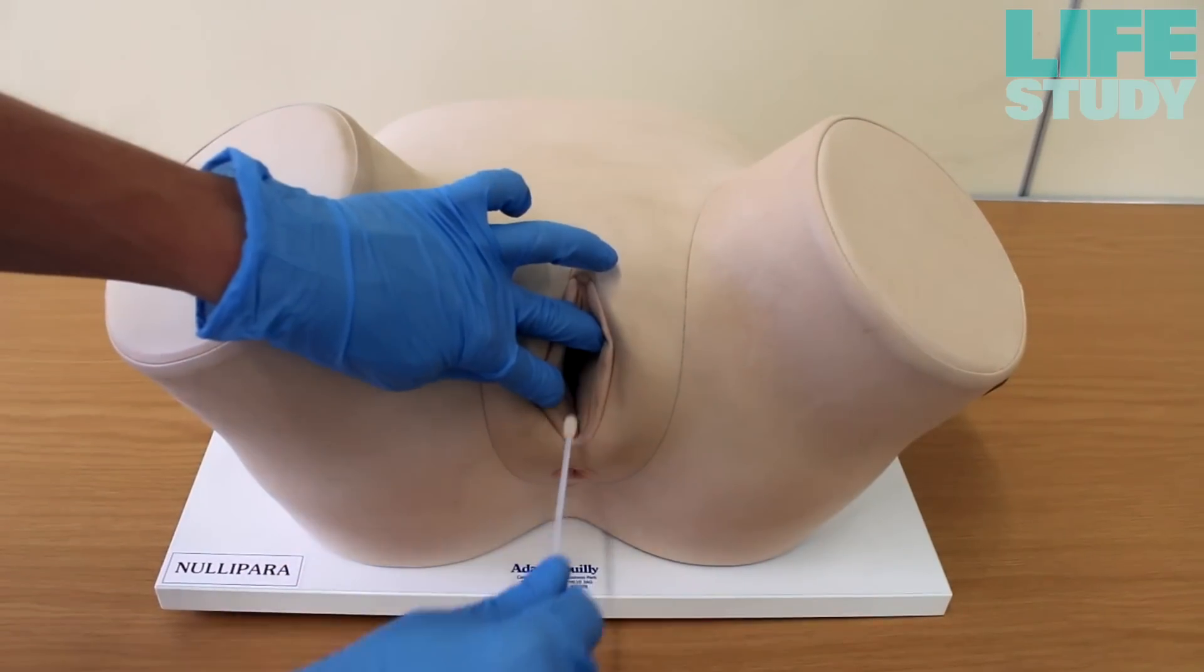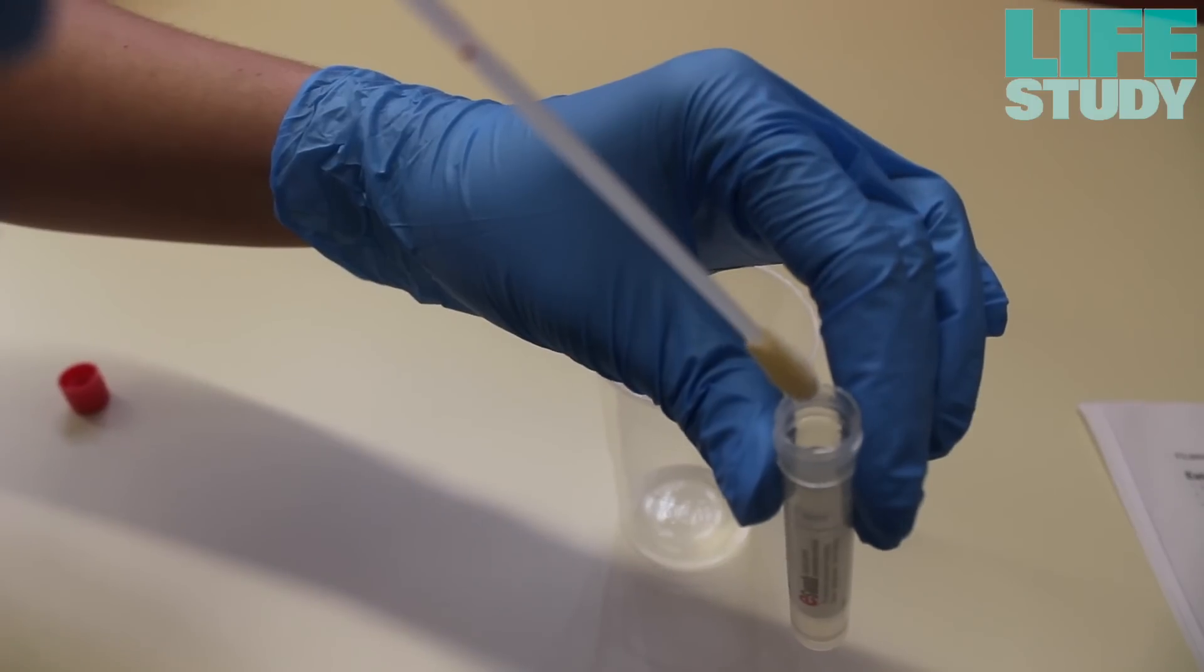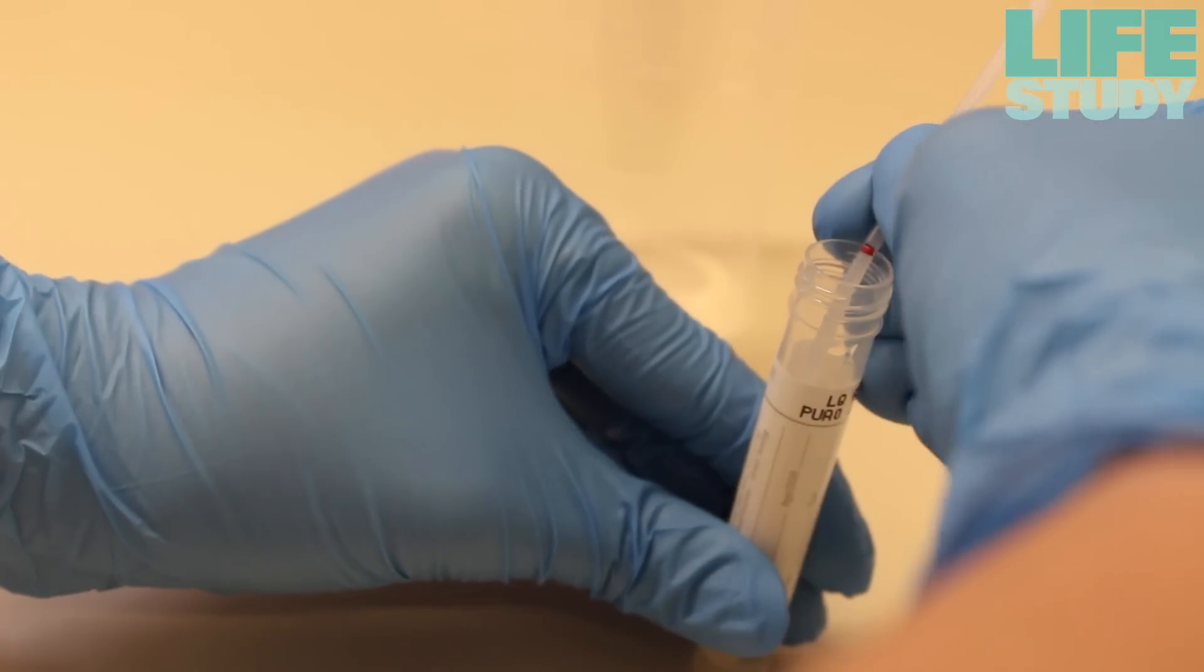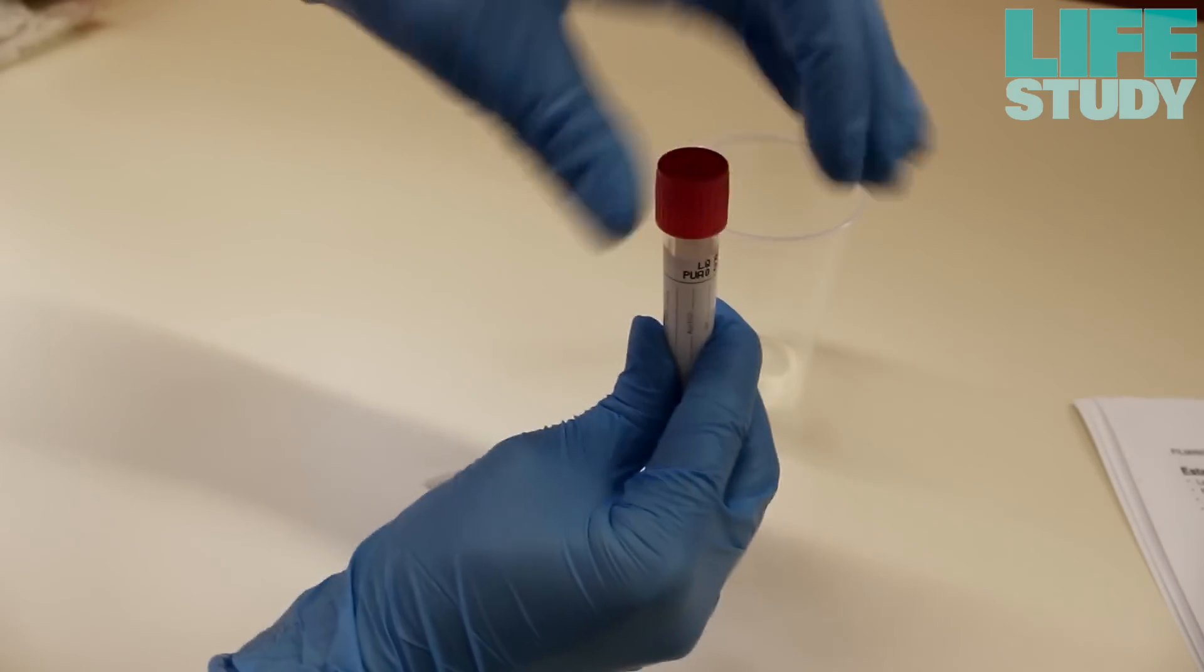Remove the swab from the vagina, again being careful not to touch the tip of the swab. Place the swab into the liquid in the collection tube. Gently break the swab at the red line by bending the handle until it snaps. Replace the cap firmly and gently swirl the collection tube several times.